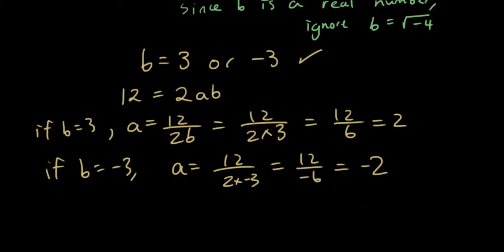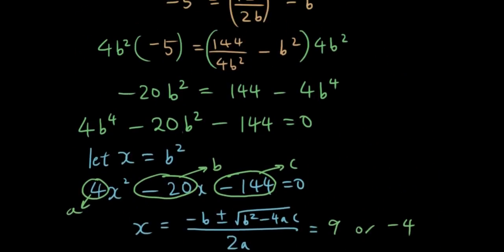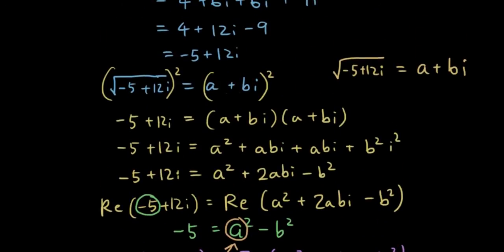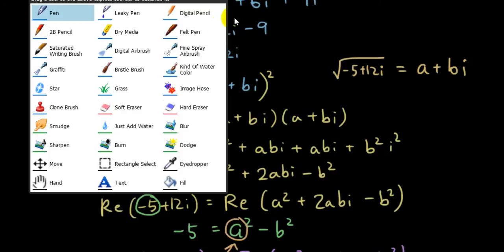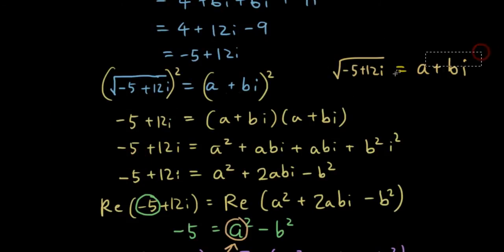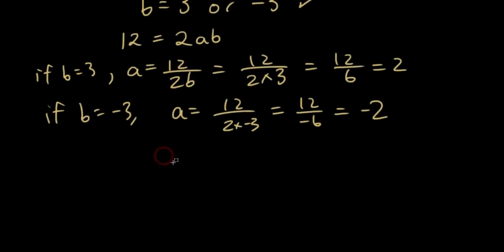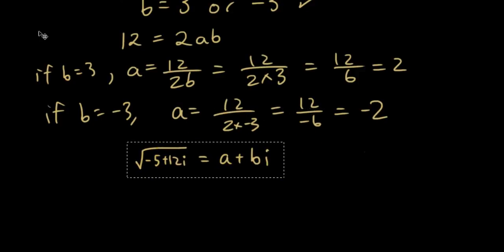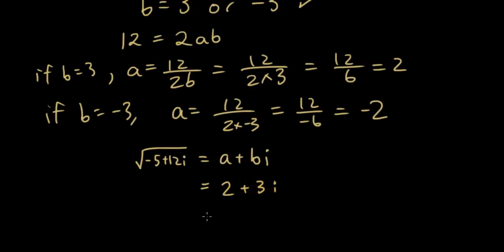Going back to our answer: the square root of negative 5 plus 12i equals a plus bi. So it is equal to either 2 plus 3i or negative 2 minus 3i. There are two possible answers.